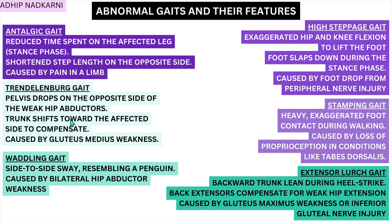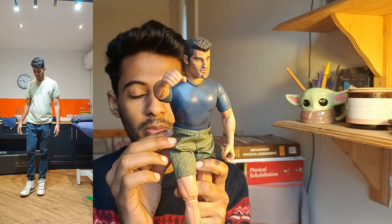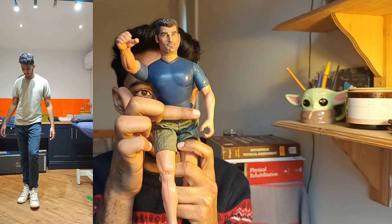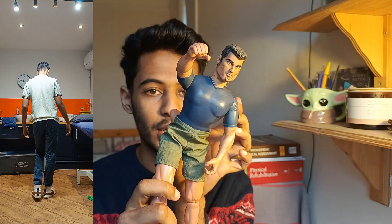Next is Trendelenburg gait. The pelvis drops on the opposite side of the weak hip abductor and the trunk shifts towards the affected side to compensate. This is caused usually by gluteus medius weakness. If his right hip abductor is weak, when he puts the right leg forward the hip abductor muscles won't be strong enough to hold the pelvis in the same line, so the pelvis drops and the trunk leans to the other side to compensate.